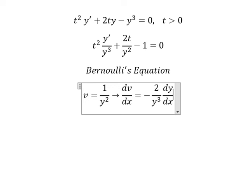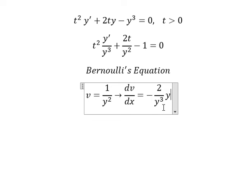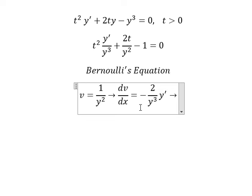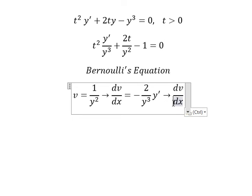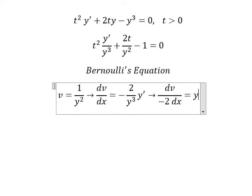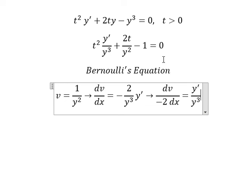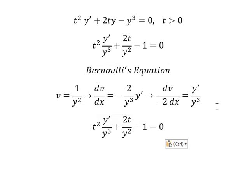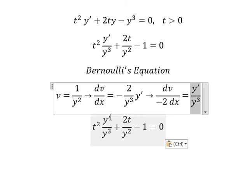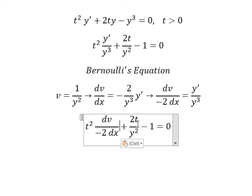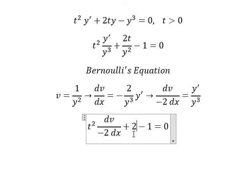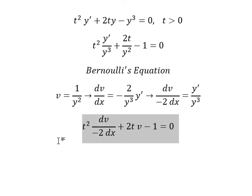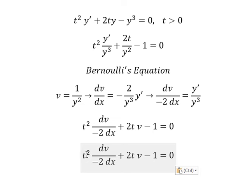dy over dx, and this one we can change by the first derivative of v. Because we don't have negative 2 in here, so we divide both sides by negative 2. So this one we change by dv/dx, and this one we change by v.